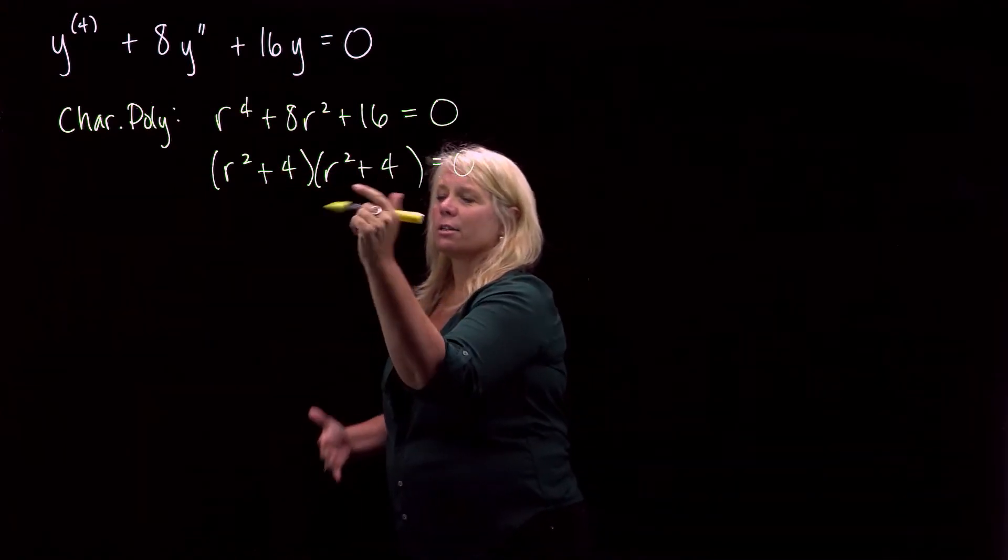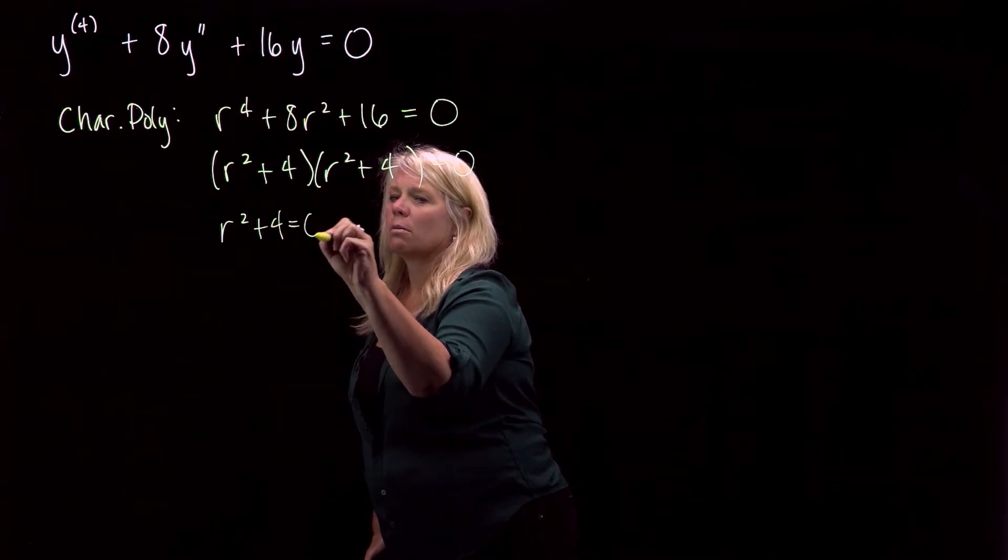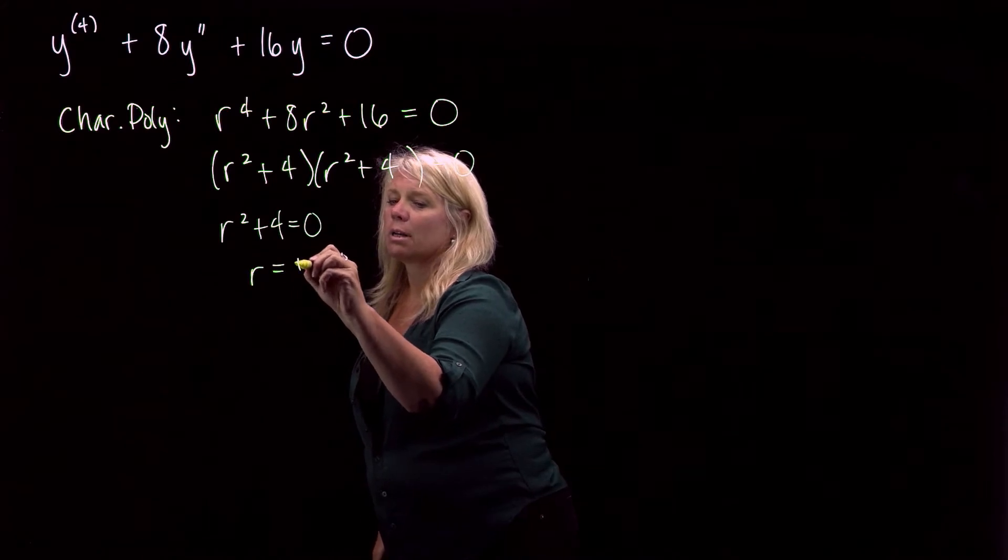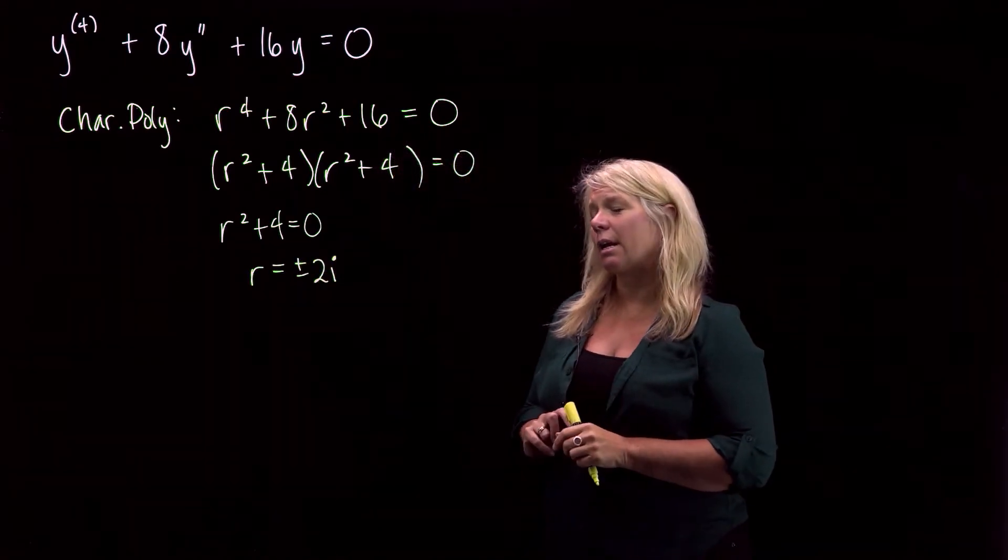But when I set each of these factors equal to zero, I'll have r squared plus four equals zero. I'll subtract four and square root both sides, we'll get r equals plus or minus two i. So non-real zeroes for the characteristic polynomial.